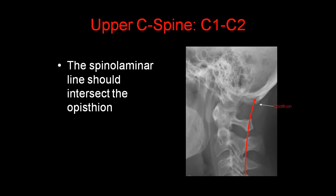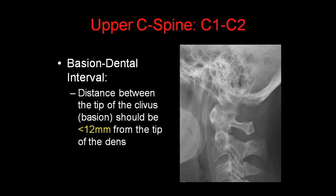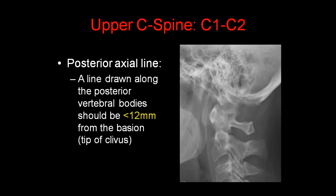The spinal laminar line should always intersect the opisthion — the bony protuberance at the base of the occipital bone. Also look at the basion-dens interval: the distance between the tip of the clivus, otherwise known as the basion, and the tip of the dens. This interval should be less than 12 mm. Also look at the posterior axial line — a line drawn along the posterior vertebral bodies — which should also be less than 12 mm from the tip of the basion.